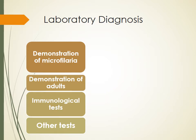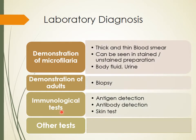There are various schemes by which we can diagnose lymphatic filariasis. First is demonstration of microfilaria — if you can demonstrate microfilaria in the peripheral blood, you can diagnose the infection. You can also demonstrate the adults by radiological means. There are immunological and serological tests for detection of antibody or antigen, and some other tests we will look at.